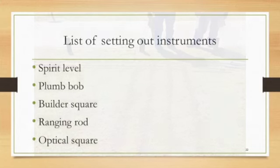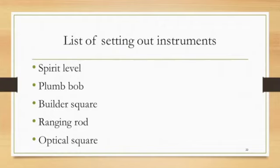In the exam, you may be asked to list the instruments used for setting out. These are: the spirit level, the plumb bob, the builder's square, ranging rods, and the optical square.